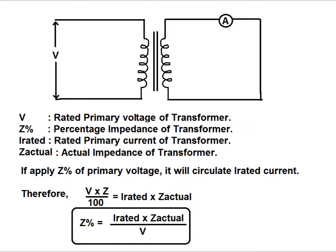If V is the rated voltage of the power transformer, Z percent is the percentage impedance, I rated is the rated primary current, and Z actual is the actual impedance of the transformer — then applying Z percent of the primary voltage will circulate I rated current in the secondary side. Therefore, V × Z / 100 = I rated × Z actual. Therefore, Z percent = (I rated × Z actual) / V. That is, it is the ratio of the rated voltage drop at rated current to the rated voltage.